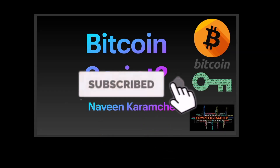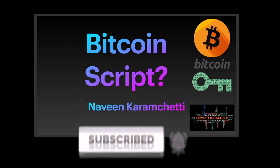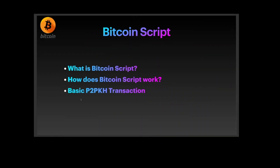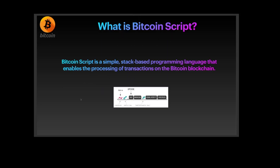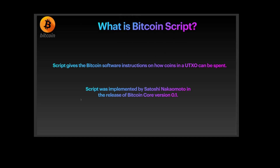In this session we're going to talk about Bitcoin Script — what it is, how it works, and a basic P2PKH transaction. A Bitcoin script is a simple stack-based programming language that enables processing of transactions on the Bitcoin blockchain. As you can see in the figure, there is a signature, a public key, an op code, and it verifies a check signature. Bitcoin script gives Bitcoin software instructions on how the coins in a UTXO can be spent.